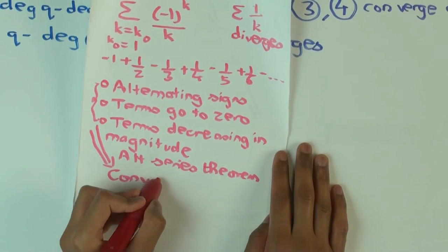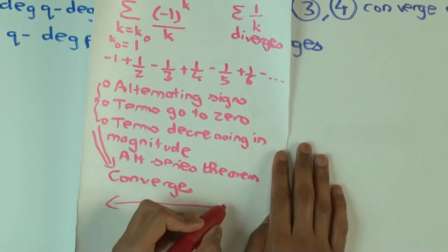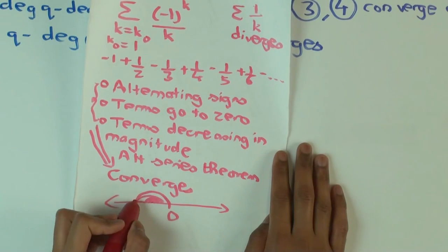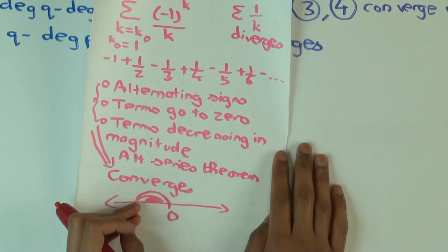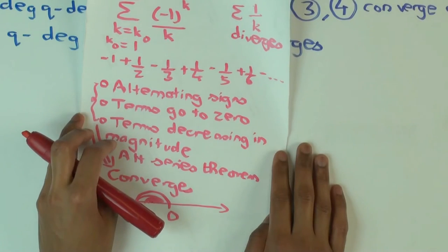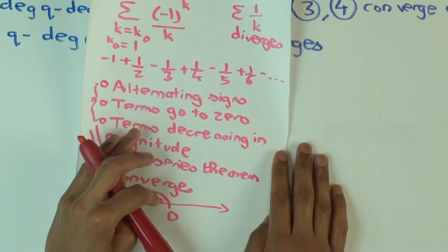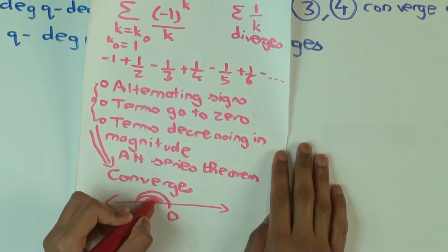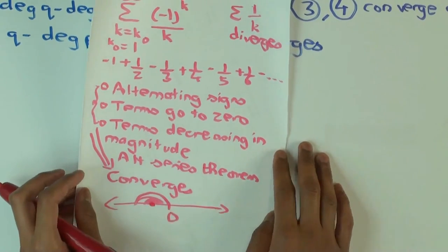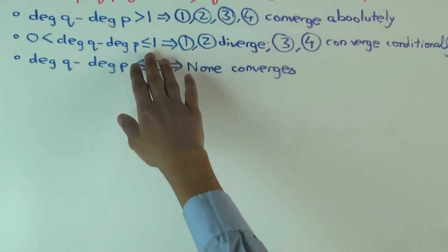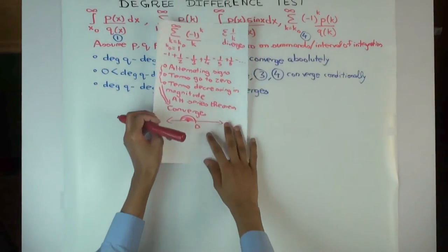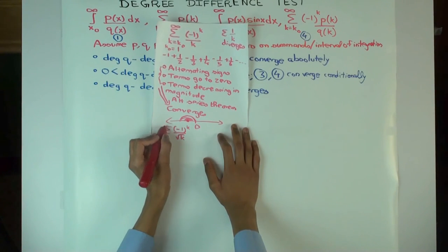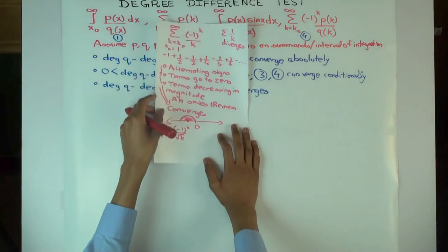The proof is intuitive: on the number line, you go down, up, down, up, but each time you reverse direction you don't go back all the way because the terms decrease in magnitude. So you keep making smaller and smaller oscillations. Because the terms go to zero, you eventually approach a fixed point — that's why the summation converges. This same logic also works for the sum of (-1)^k over root k, for instance.